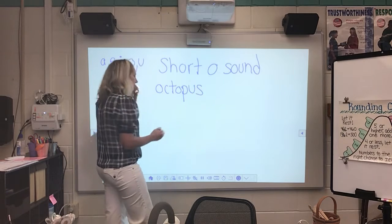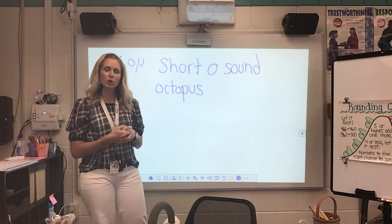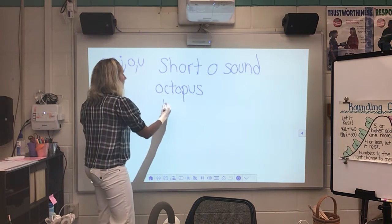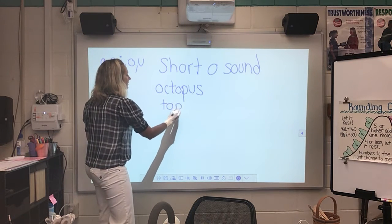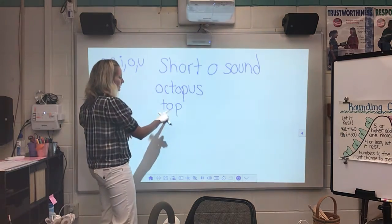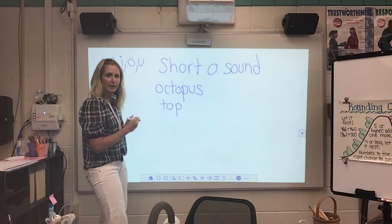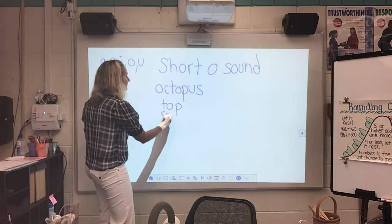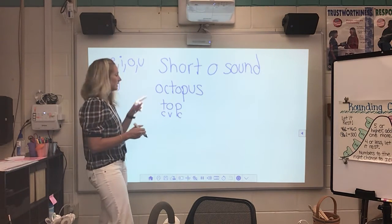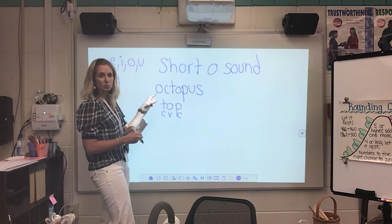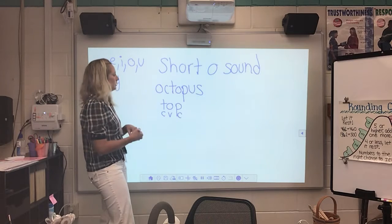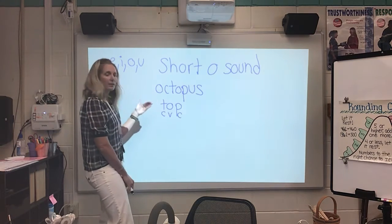All right, let's think of some other words that have the short O sound. How about: top, off. You'll notice the pattern — we have a consonant, vowel, consonant. That's the CVC pattern for the short O sound. The short O sound can also start at the beginning of a word, like: O, O, octopus.